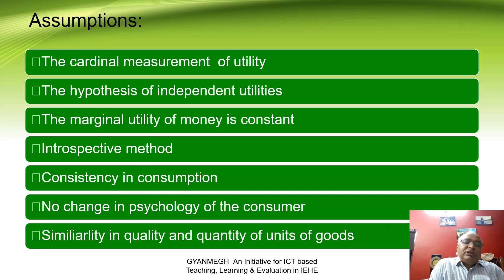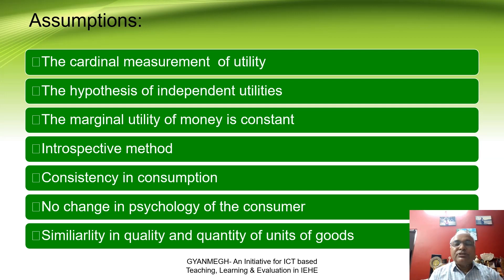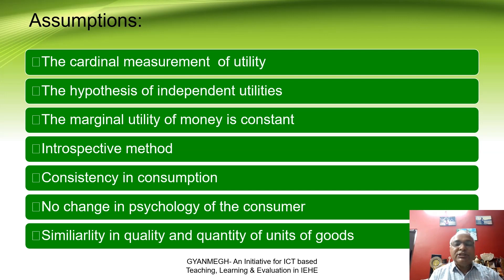These are the assumptions. First, Cardinal measurement of utility — the satisfaction a consumer gets from any commodity or service can be measured numerically in terms of utility units. For example, if you get one piece of apple, you may get 10 utils — that is Cardinal measurement. Second, the Hypothesis of Independent Utility — the consumption of a consumer does not depend upon consumption of any other goods or commodities; it depends upon the same goods or same units of the goods.